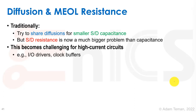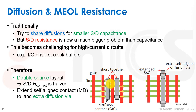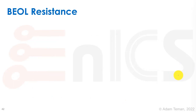For diffusion and middle-end-of-line resistance: traditionally we would share diffusions for smaller source/drain capacitance, but source and drain resistance is actually a much bigger problem than capacitance in these technologies. So we're not sharing diffusions anymore, and this becomes really challenging for high-current circuits like I/O drivers and clock buffers. We'll often do double source layouts — one transistor pushes the left side and another the right side, or extend diffusions with vias at both sides to reduce resistance. These techniques apply to analog and custom design where the parasitics are particularly tough.